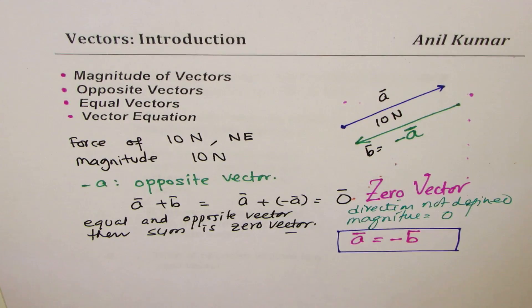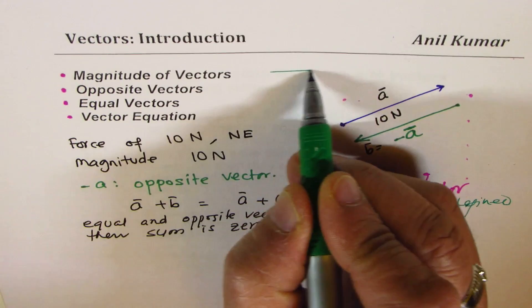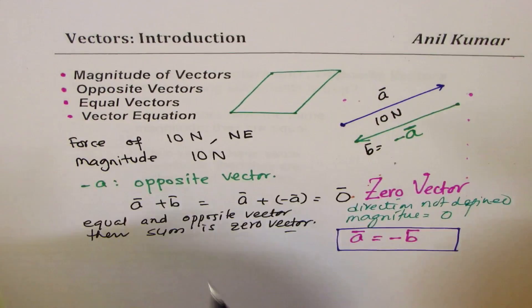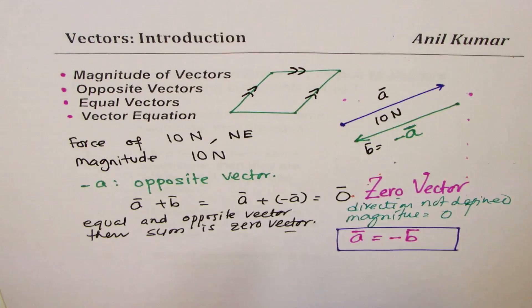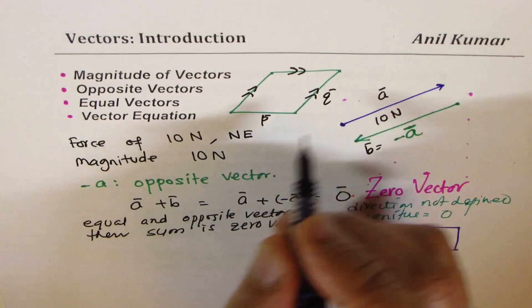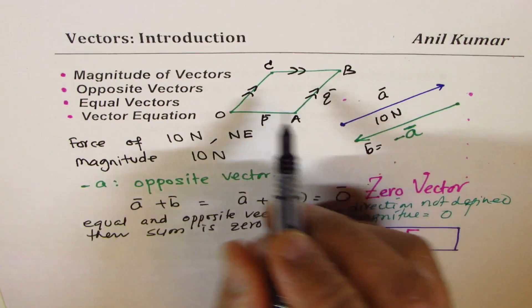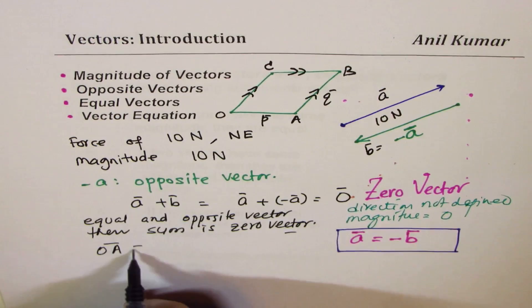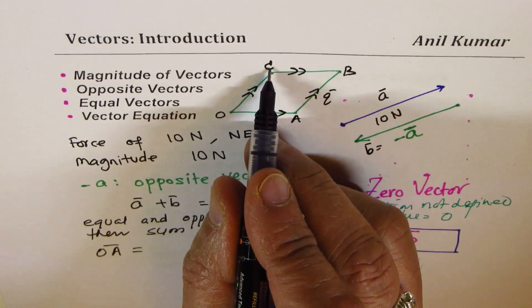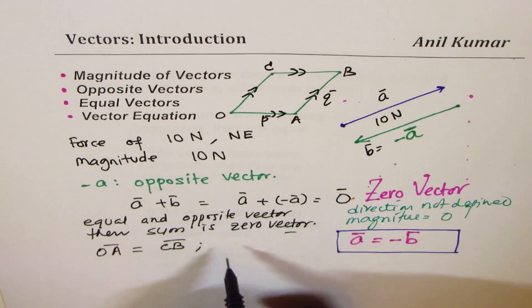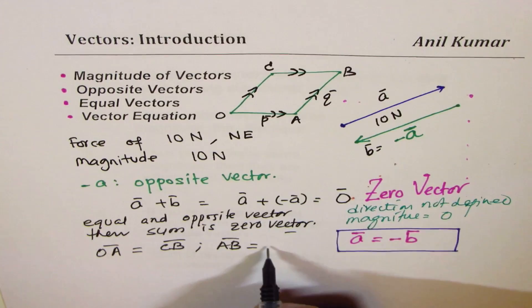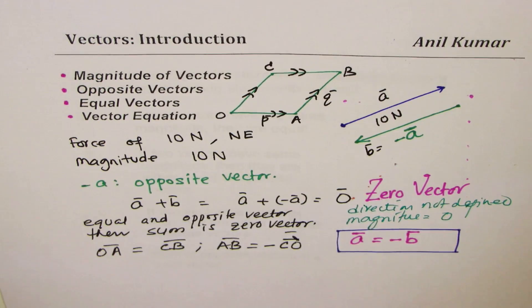We can write that vector A is equal to negative vector B — A = −B — where B is equal and opposite. This forms a vector equation. If I have a parallelogram with vertices O, A, B, C, and vectors P and Q, we could write that vector OA equals vector CB. We could also write that vector AB equals minus vector CO. So that becomes an equation equating vectors.